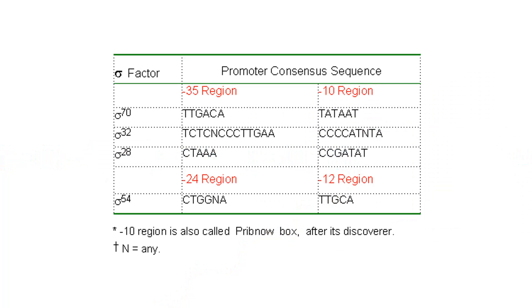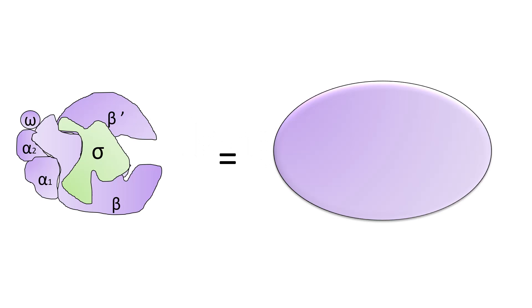The most common sigma factor, sigma 70, binds to the minus 35 base pair TTGACA region and the minus 10 TATAAT region. Other sigma factors in E. coli include sigma 32 or sigma 28, which are used for heat shock genes and other specialized functions. The second step is elongation.